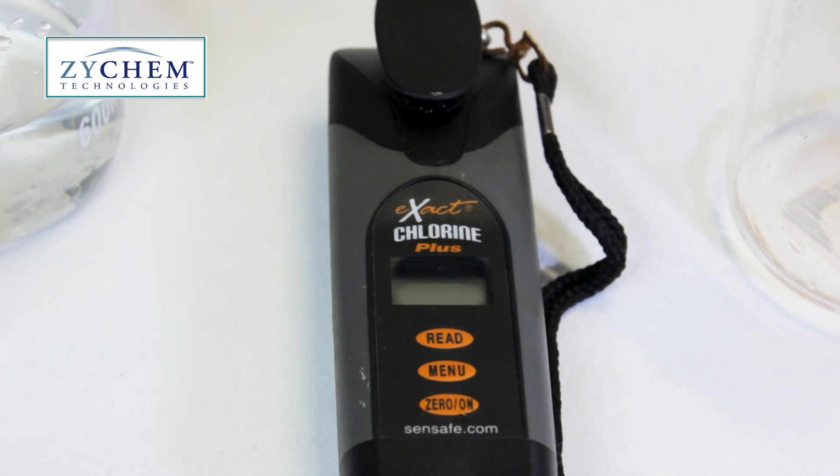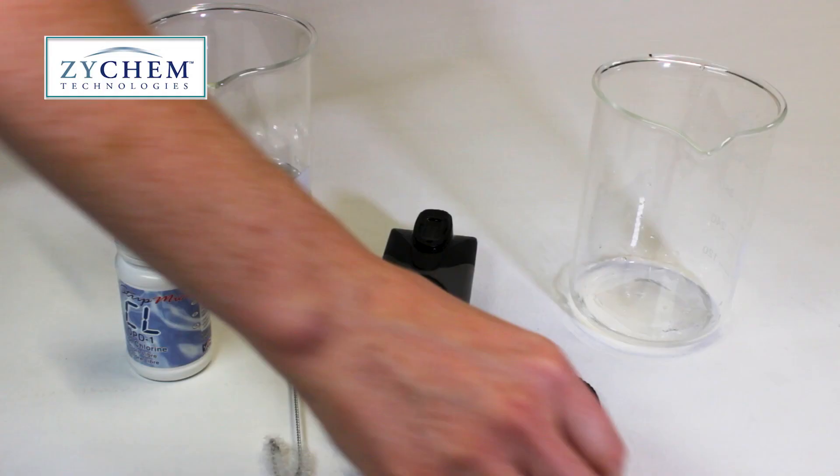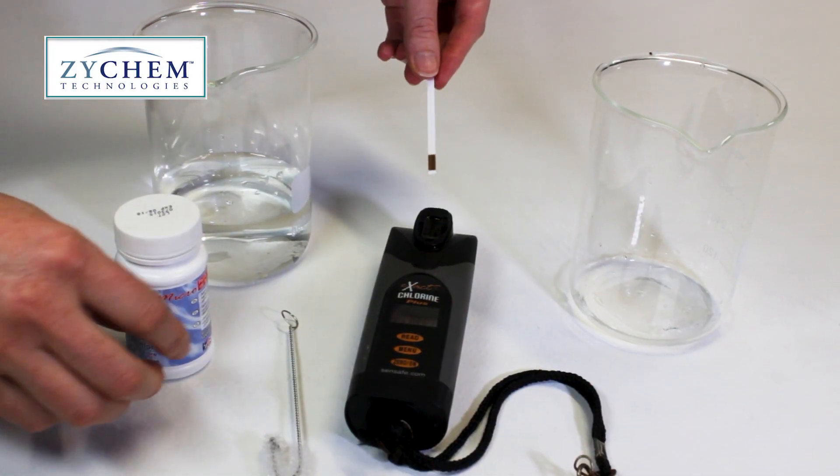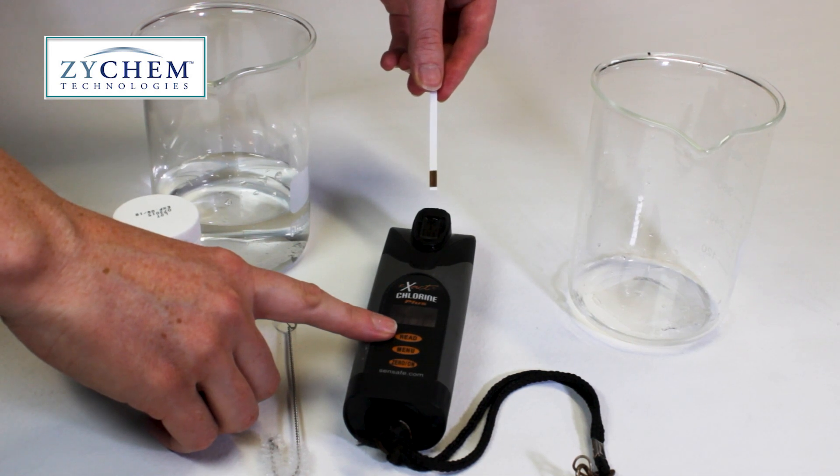Once the monitor is zeroed, take the cap off, pick up the DPD-1 strip, and place it into the cell and push the read button at the same time.